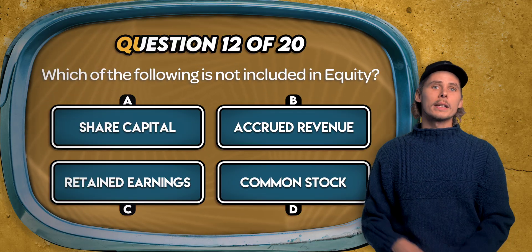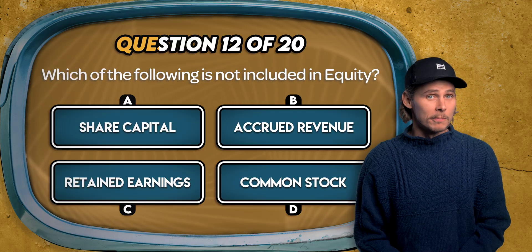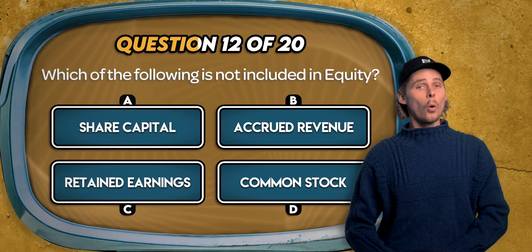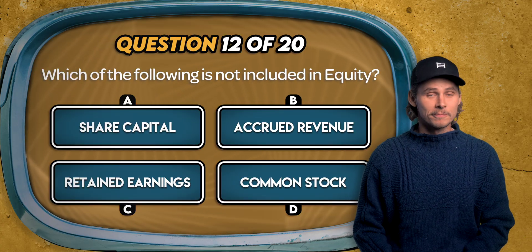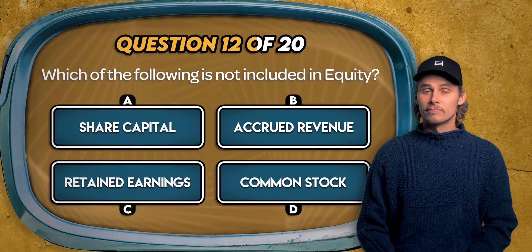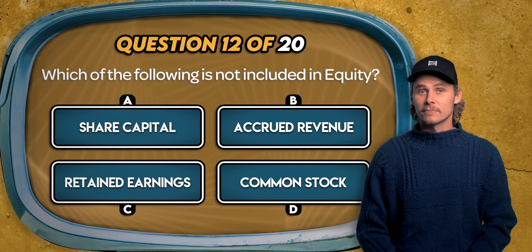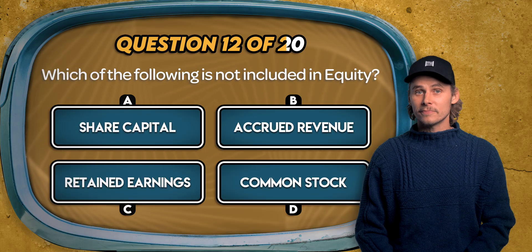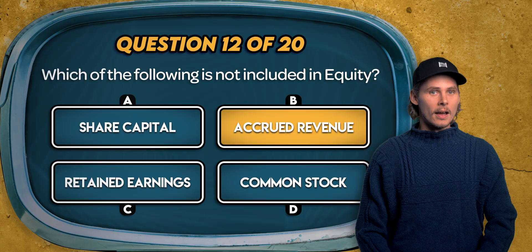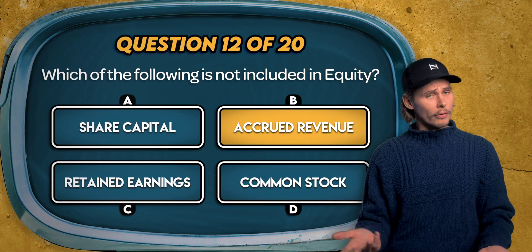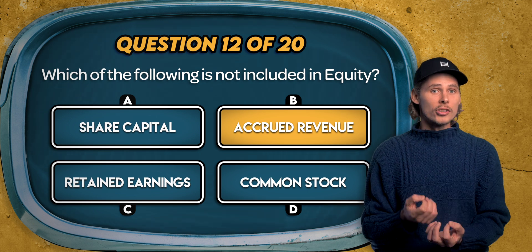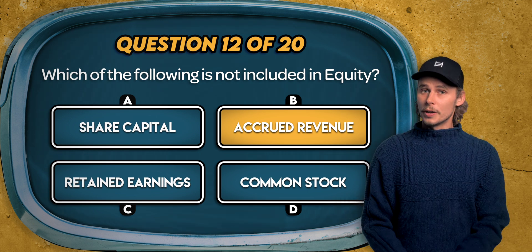Question 12. Which of the following is not included in equity? Could it be share capital, accrued revenue, retained earnings, or common stock? The answer is B. Accrued revenue, or unbilled revenue, is an asset. It represents income that has been earned but not yet received or recorded.